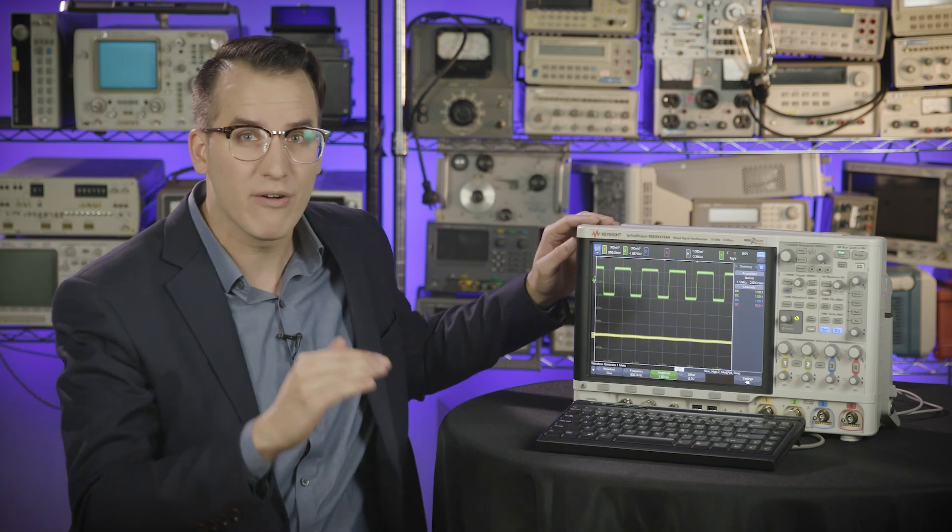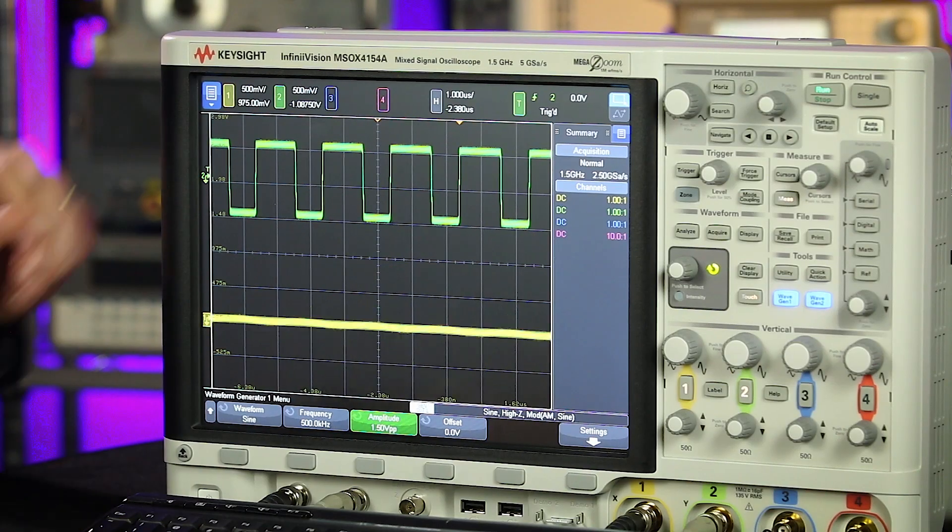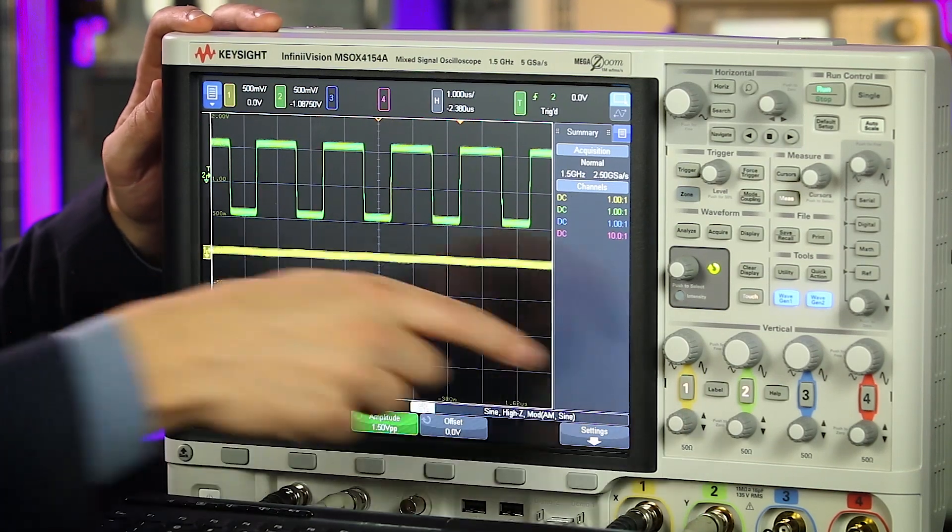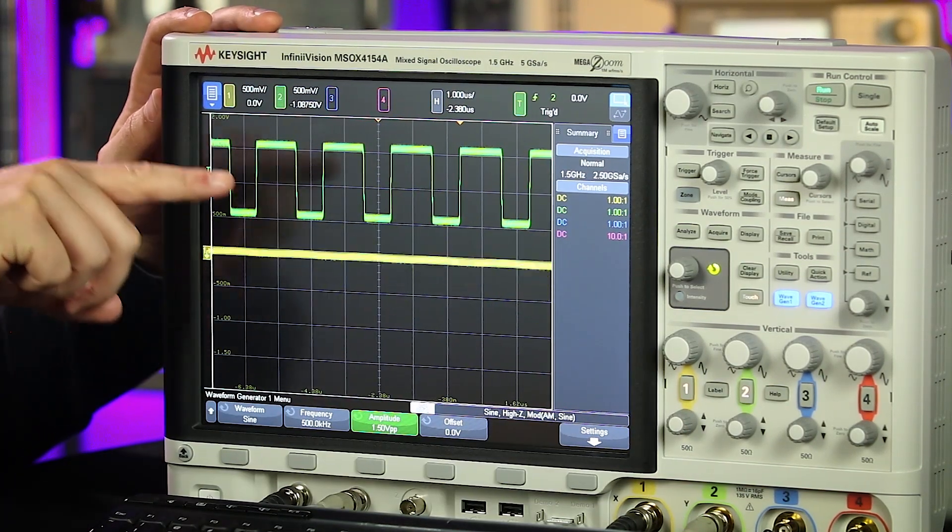Number three, pushable encoder knobs. This is a big one that a lot of people don't know about. If your scope has pushable encoders behind your front panel knobs, there's a good chance you can do this. Pushing a knob automatically zeros out or centers that control. For example, if I push the knob for channel one, it's going to automatically center channel one on screen.